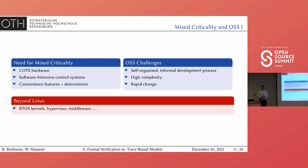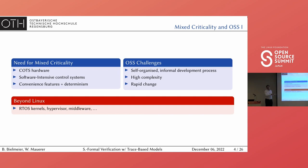To summarize our motivation: why do we need mixed criticality systems based on Linux? There is a trend towards using common off-the-shelf hardware. Industry is under pressure to build software-intensive control systems, relying on loads of pre-existing software, because we want to combine convenience features with the strict determinism required in such systems. Many elements of the traditional open source engineering process — often informal from the point of view of safety certification — exist. The software is of high complexity; a Linux kernel is infinitely more complex than a traditional QNX or VxWorks real-time kernel. And the software also changes rapidly.